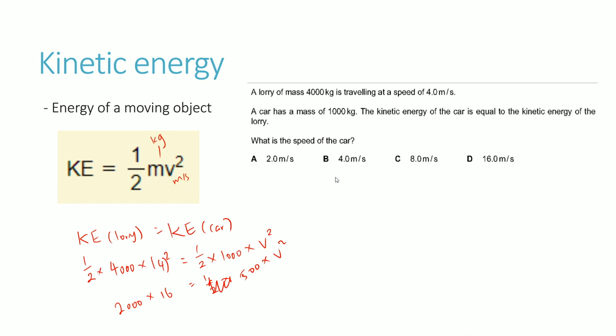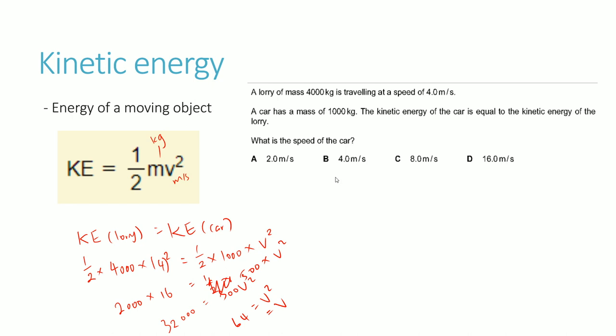Using the calculator: 2,000 times 16 is 32,000. To get rid of the 500 on the right-hand side, divide 32,000 by 500 to get 64. Finally, to get v on its own — the speed of the car — take the square root of 64, which gives 8. Therefore, the answer is 8 meters per second.